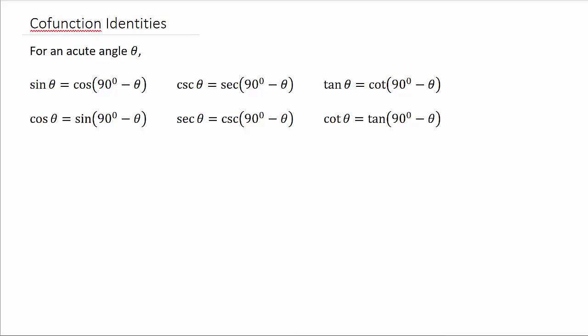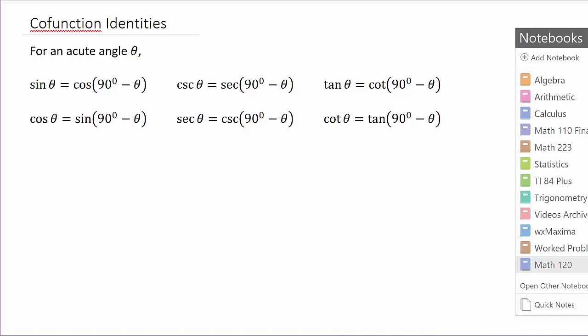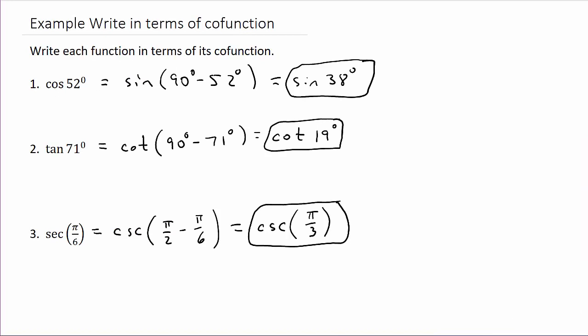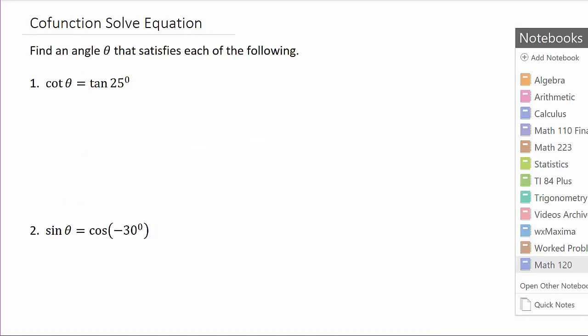Alright, so let's take a look at this video. We're going to be dealing with co-function identities and we're going to solve trig equations where we have to apply these co-function identities. So here are your co-function identities: sine theta is cosine of 90 minus theta, cosine is sine of 90 minus theta, and cosecant and secant are co-functions, as are tangent and co-tangent. This video focuses on solving equations using these identities — check out my other video if you're looking for just rewriting trig functions in terms of their co-function.